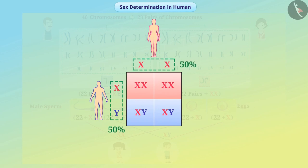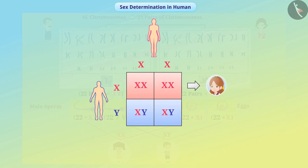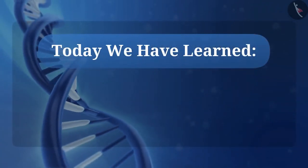All children get an X chromosome from the mother, so their sex determination depends on the chromosome obtained from the father. If the child inherits the X chromosome from the father, then it will be a girl child. If the child inherits the Y chromosome from the father, then the child will be a boy. This happens completely at random. So it is wrong to hold the father or mother responsible for not having an infant of any particular gender. Today we have learned about sex determination.